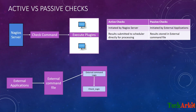There are two kinds of checks in Nagios: active checks and passive checks. In active checks, the Nagios server initiates a check command, executes plugins on the remote agent — for example, a CPU utilization plugin — and gets the output back from the agent. This is called an active check because the Nagios server initiates the command.